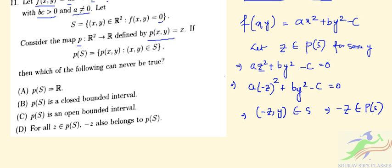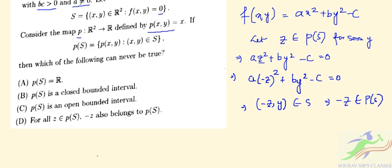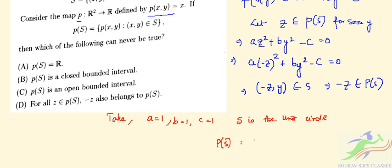Now let's check with specific values. If we take a = 1, b = 1, c = 1, then S becomes the unit circle, since x² + y² - 1 = 0. You can see that p(S) will be the interval [-1, 1], which is a closed and bounded interval contained in R.